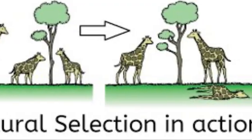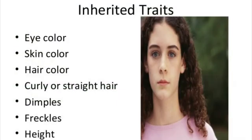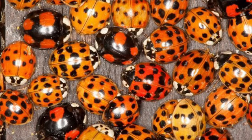In order for natural selection to work, a couple of things have to be true. First, individuals must inherit their traits from their parents — something we've studied in previous units and was relatively obvious even to Darwin and the people of his time. Secondly, you need variation in your population, meaning that even siblings from the same parents are different, and throughout the population you have quite a lot of differences between individuals.